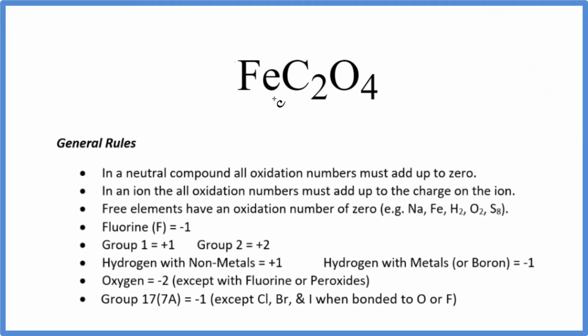In this video we'll find the oxidation numbers for FeC2O4. This is iron(II) oxalate. First we recognize there's no negative or positive sign after the iron(II) oxalate. It's a neutral compound overall, so all the oxidation numbers here are going to add up to zero.